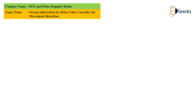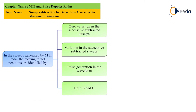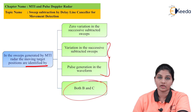The next question is: in the sweeps generated by MTI radar, the moving target positions are identified by — option A: zero variation in the successive subtracted sweep; option B: variation in the successive subtracted sweep; option C: pulse generation in the waveform; option D: both B and C. The correct answer is option D — both B and C — meaning moving target positions are identified by variation in the successive subtracted sweep and also by the pulse generated in the waveform.